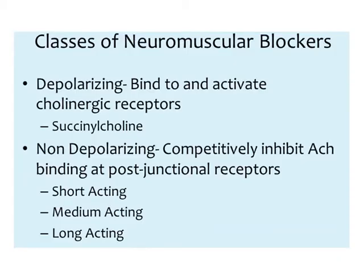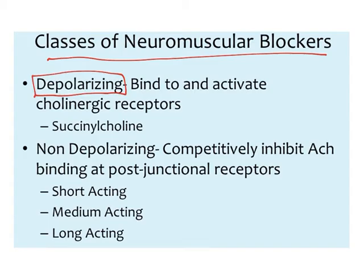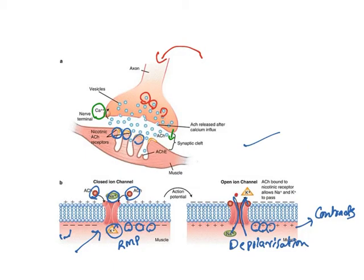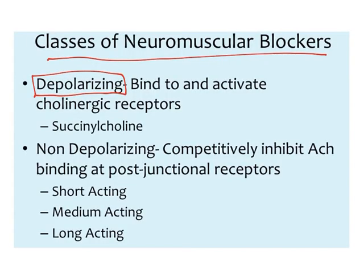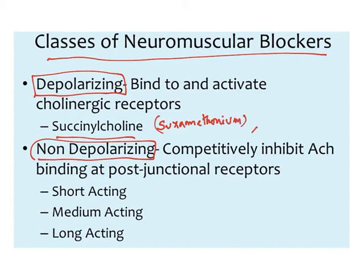There are two classes of neuromuscular blockers: depolarizing agents and non-depolarizing agents. Depolarizing agents — such as succinylcholine (also known as suxamethonium) and decamethonium — cause excessive stimulation and desensitization of nicotinic receptors. Because nicotinic receptors desensitize very quickly upon excessive stimulation, when depolarizing agents are given they cause desensitization, resulting in skeletal muscle blockade. Even if acetylcholine levels are increased, the effect is not reversed — they are therefore non-competitive. They act as nicotinic agonists.